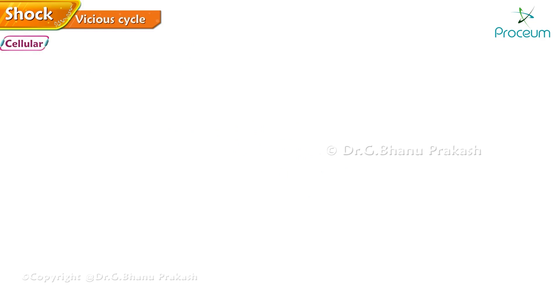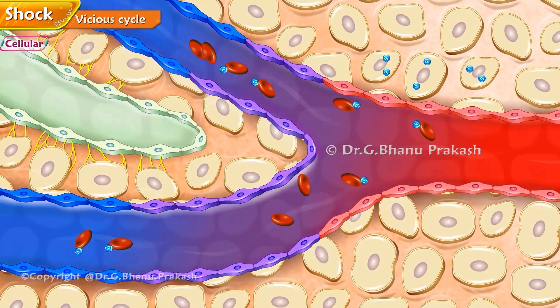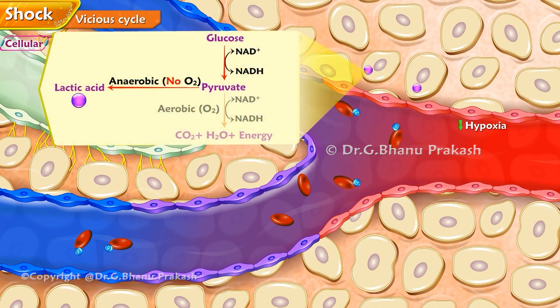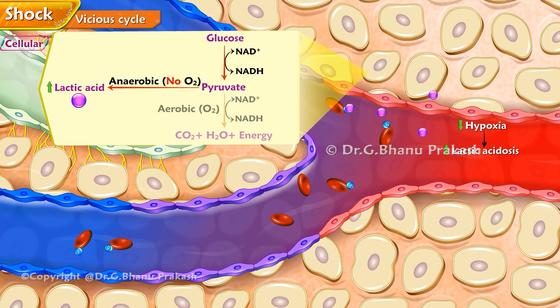Cellular stage: As perfusion to the tissues is decreased, cells are deprived of oxygen and must switch from aerobic to anaerobic metabolism. The product of anaerobic respiration is lactic acid, not carbon dioxide. Accumulation of lactic acid in the blood produces systemic metabolic acidosis.